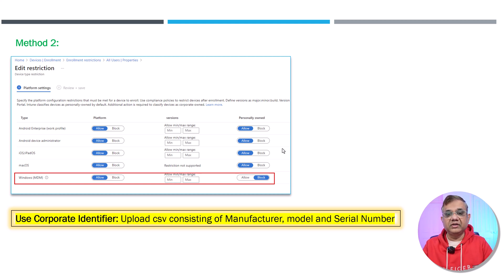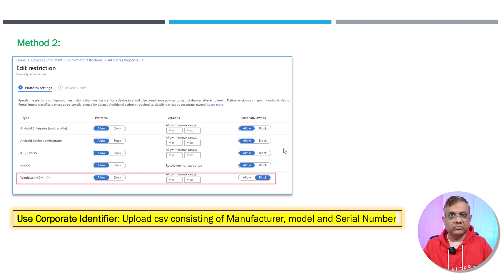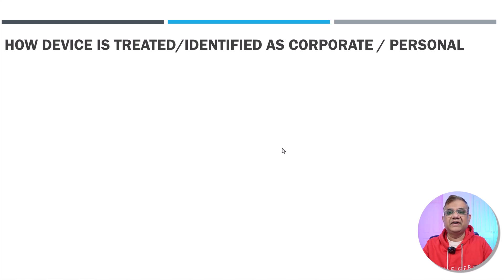We should block personally owned devices, but blocking them also blocks Autopilot v2. The solution is to use the Windows Corporate Identifier — a new feature I've created a separate video on. In simple terms, it consists of a CSV file containing manufacturer, model, and serial number. When uploaded to the Intune portal, that device is treated as a corporate device. This resolves the problem: we block personally owned devices but mark specific devices as corporate using the CSV file.